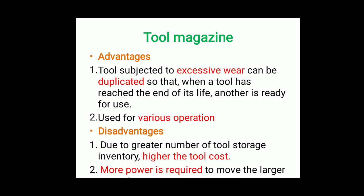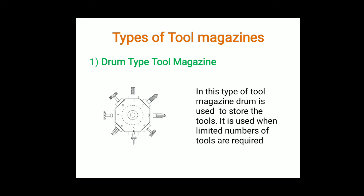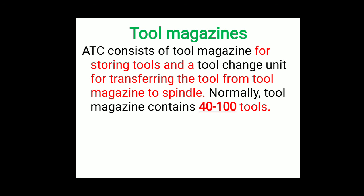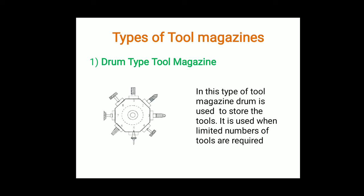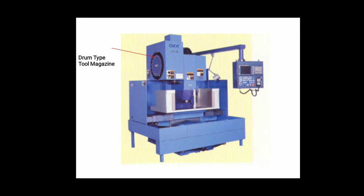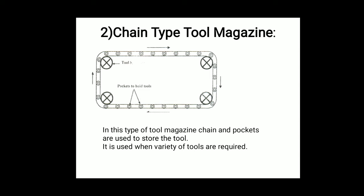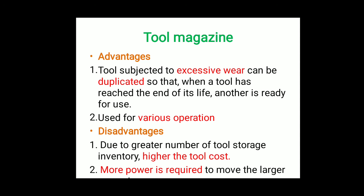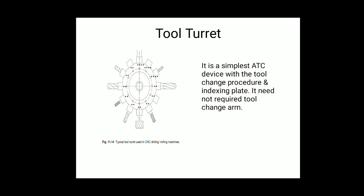Disadvantages of the tool magazine: due to the greater number of tools in storage inventory, it leads to higher tool cost. More power is also required to move the larger magazines. In summary, the tool magazine normally contains 40 to 100 tools; the drum type is for limited tools and the chain type is for when a variety of tools are required.